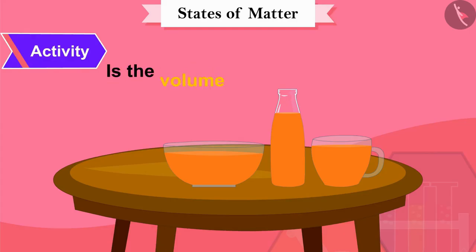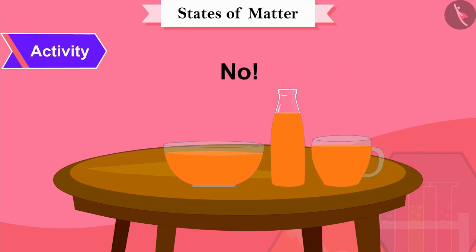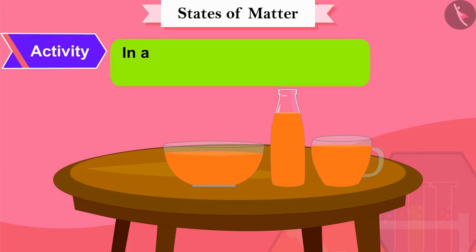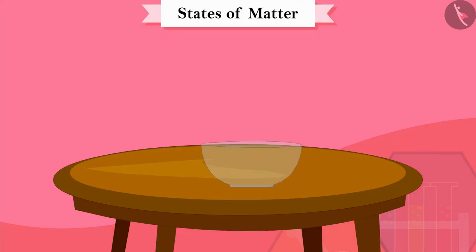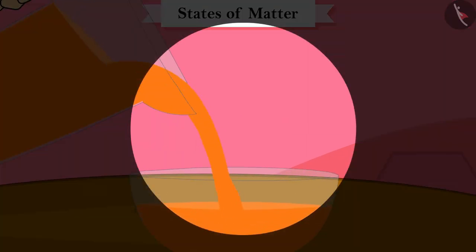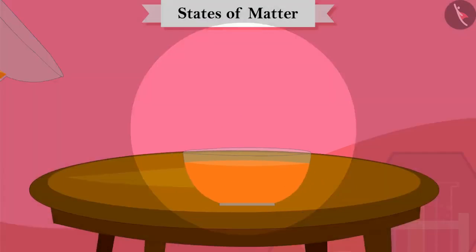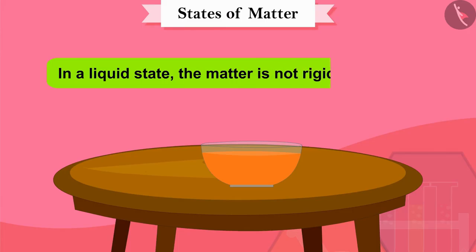Is the volume of juice changing from one vessel to another? No. Therefore, we can say that in a liquid state, the volume of matter remains fixed. Does the juice flow easily when poured from the jug into the glass utensils? Yes — this means that in a liquid state, matter is not rigid, but it is fluid.